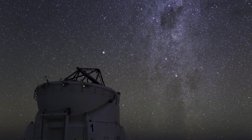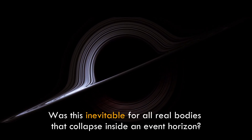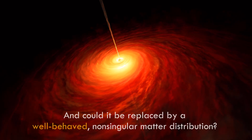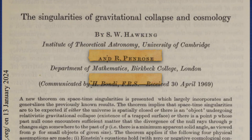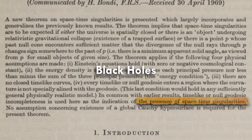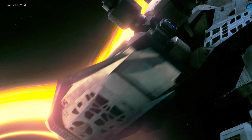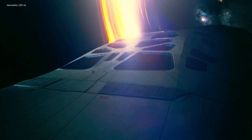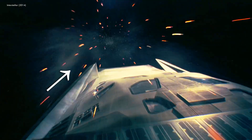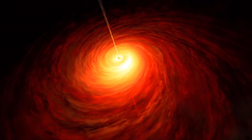People's attention then shifted to the possible curvature singularity at the center of Schwarzschild black holes. The questions that Kerr asks are pretty complicated: Was this inevitable for real bodies that collapse inside an event horizon, and could it be replaced by a well-behaved, non-singular matter distribution? Back in 1970, Stephen Hawking and Roger Penrose proposed the idea of singularity within black holes in a joint paper. Simply put, when we talk about singularities in the context of black holes, it means that once you pass the event horizon — the point of no return — you are headed in only one direction. Even if you try to move left, right, or up, you are still essentially going downwards toward the singularity.